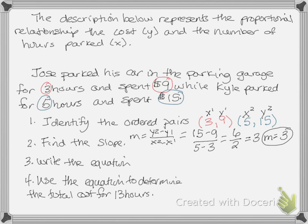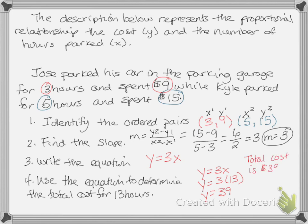Now I need to take that slope, m equals 3, and write the equation: y equals 3x. We're going to use the equation to determine the total cost for 13 hours. Hours is our x value, so we plug in 13: y equals 3 times 13. Multiplying 3 times 13 gives us 39. So the total cost is $39 when parking for 13 hours.